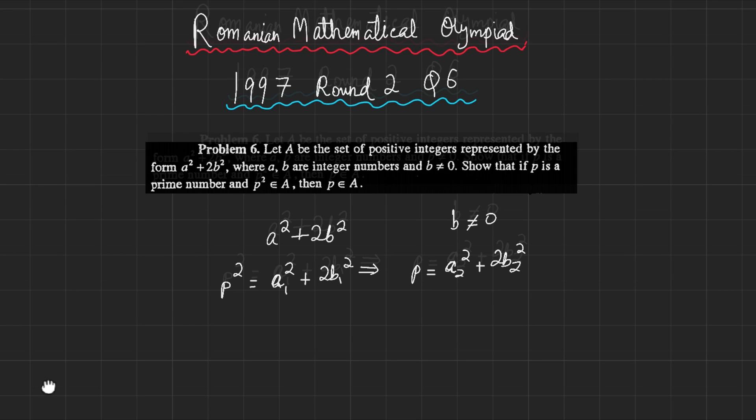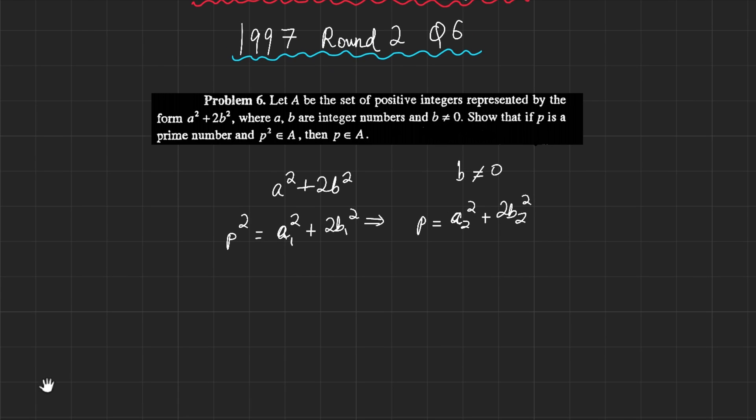How will we go about trying to prove this? The number 1 rule in number theory, or at least elementary number theory, is to always try to factor. You can never go wrong factoring. We know this is a given condition, so we should start from here and try to proceed. To factor this, I can simply write p squared minus a1 squared equals 2b1 squared, which can be factored as p plus a1, p minus a1 equals 2b1 squared.